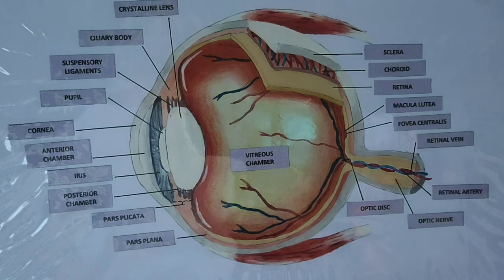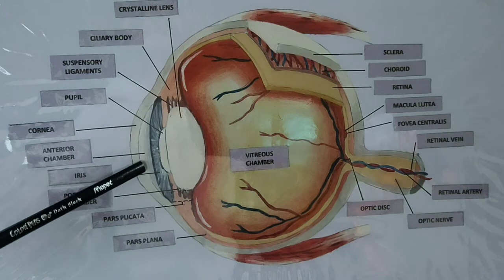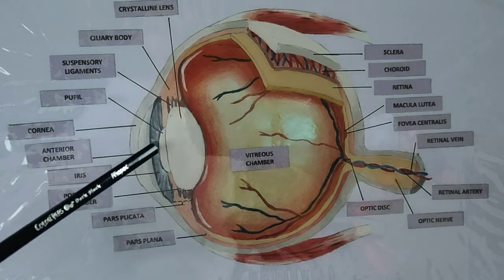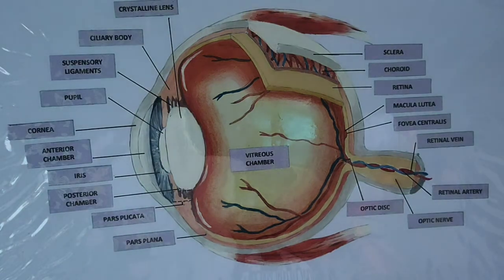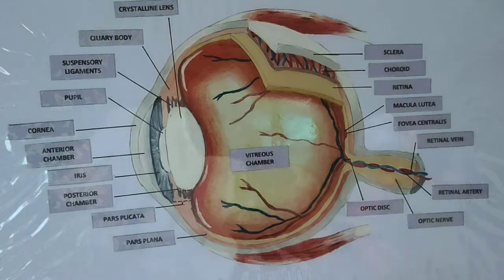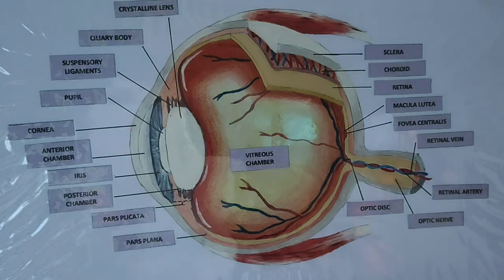The vitreous cavity houses a substance we call the vitreous humor. It's a jelly substance, unlike the fluid that is found in the anterior and posterior chamber, the aqueous humor. The aqueous humor is more of a watery type. The light would go through it and then it reaches the retina, where it is going to be transduced and changed into another form of energy.